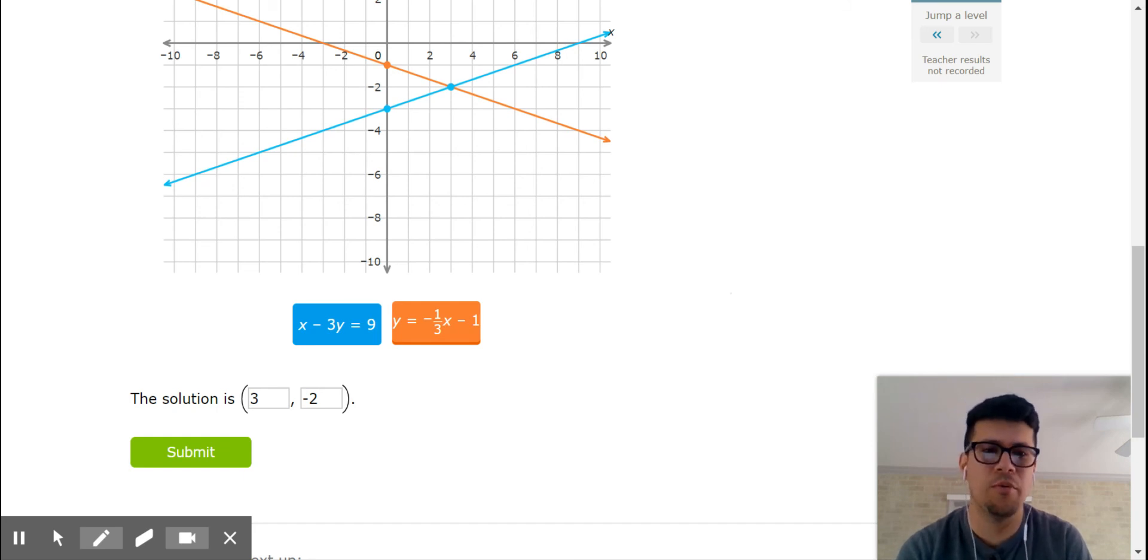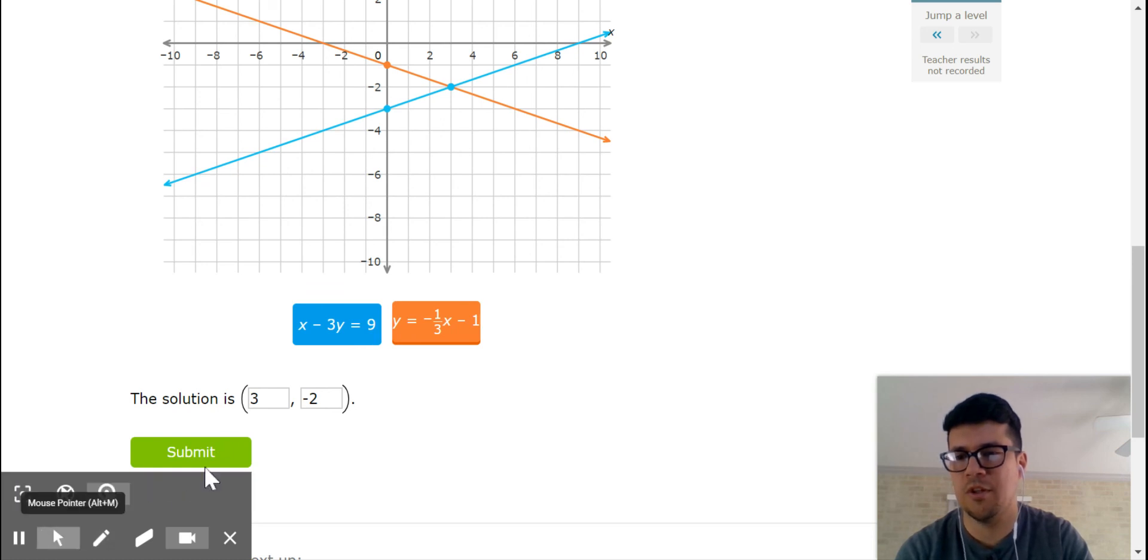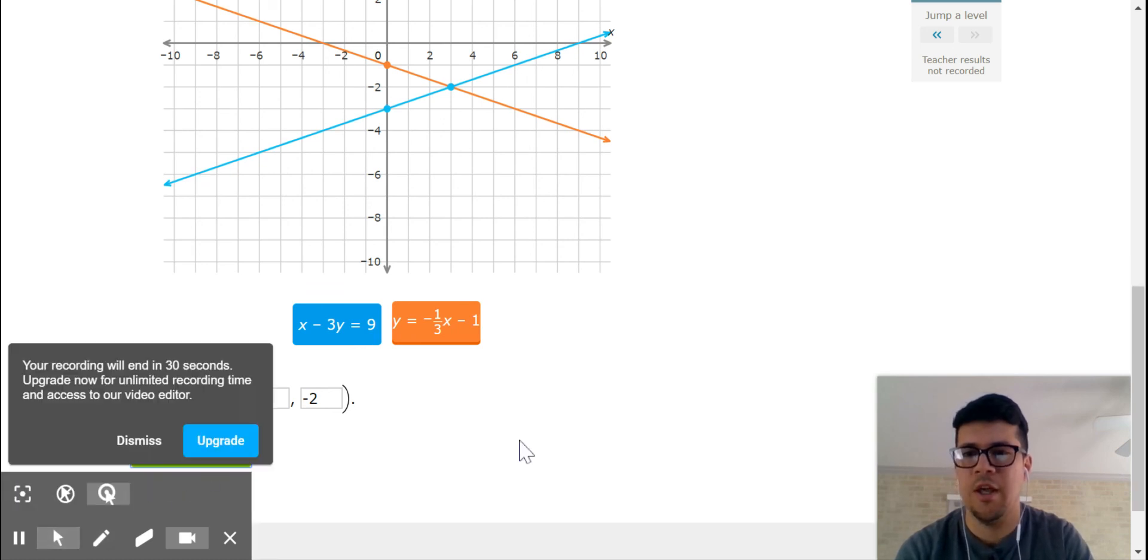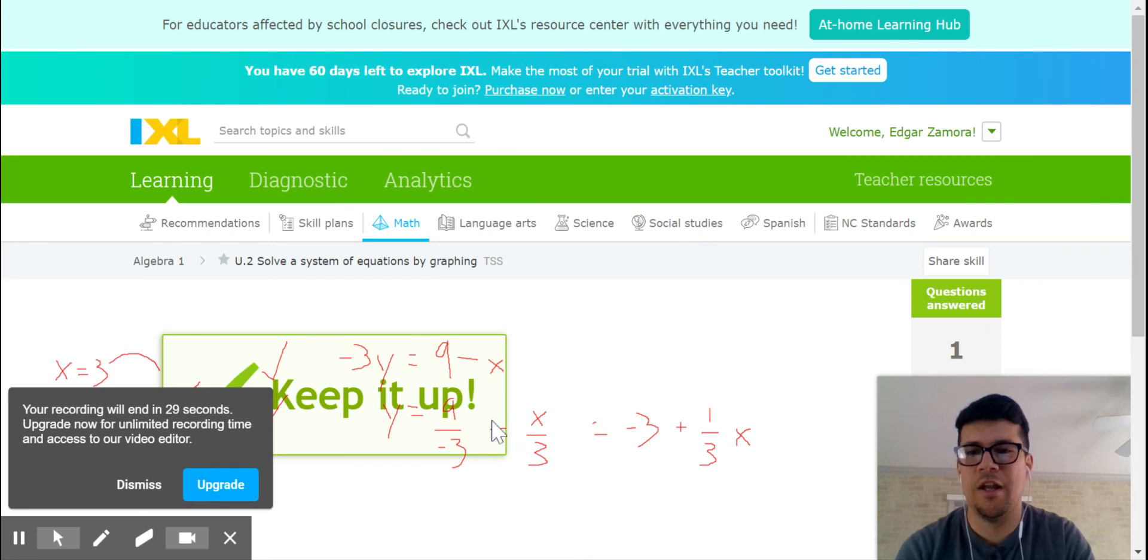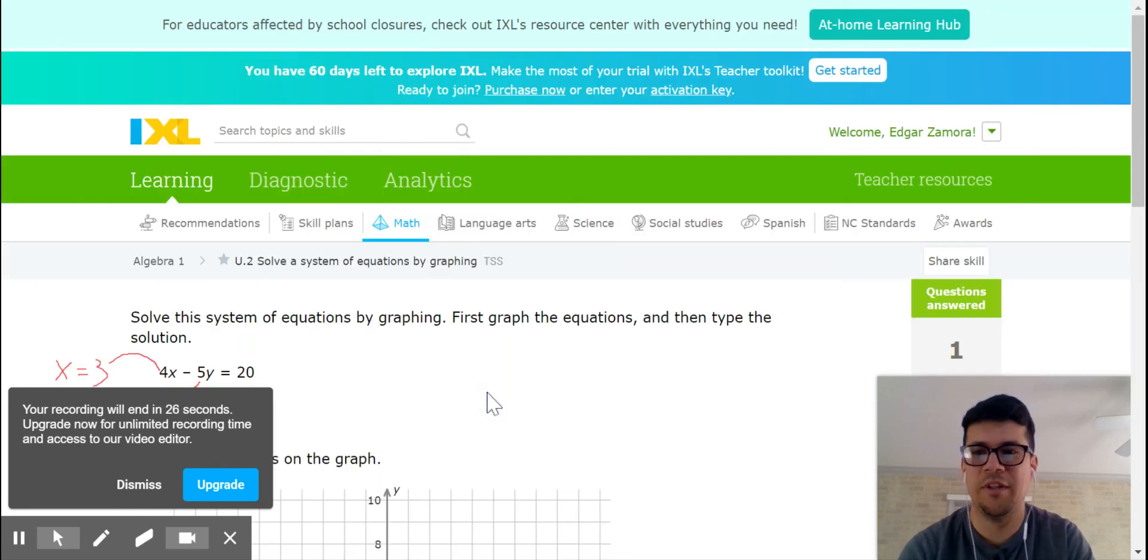Other thing is if you're having trouble graphing these the way that iExcel is asking you to graph them, if you're having trouble graphing them by hand, you can always go over to Desmos and graph them there. But this is also a good review of how to put these linear functions back in slope intercept form. So just to double check, we're going to submit our answer. And it says that we should keep it up. So fantastic. That is solving by graphing. And hopefully that works for you guys.